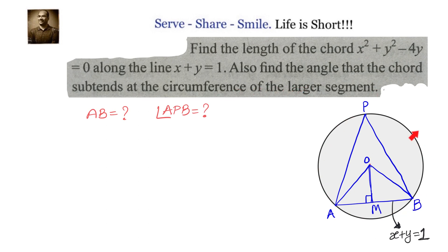We have been given an equation of a circle x² + y² - 4y = 0, and we have been told that the chord on the circle is AB, given by the equation x + y = 1. We have to find out the length of the chord AB, and also we need to find the angle subtended by the chord at any point on the larger (major) segment — that is, angle APB.